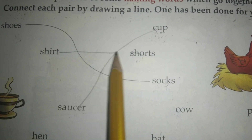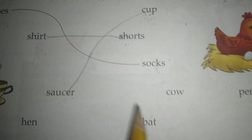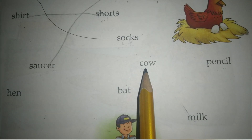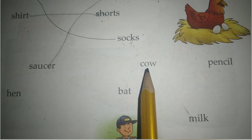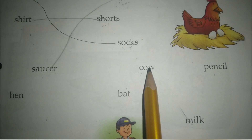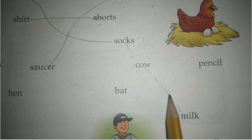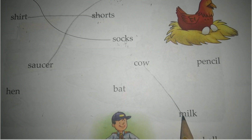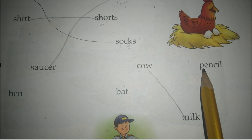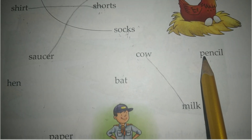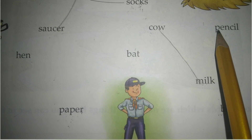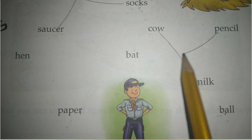Now, cow — what does cow give? Cow gives milk, toh cow ko connect karenge milk ke saath. Now pencil — pencil we use for writing. We write on paper, so pencil ko connect karenge paper ke saath.